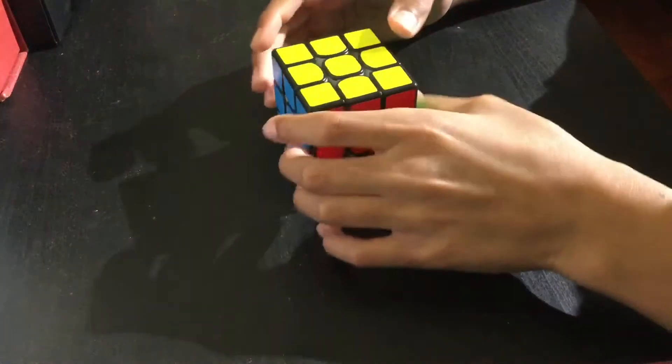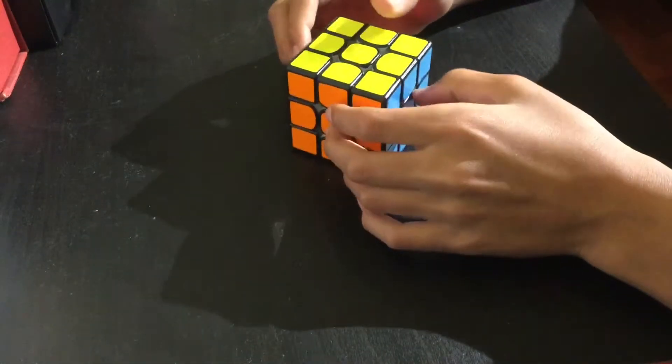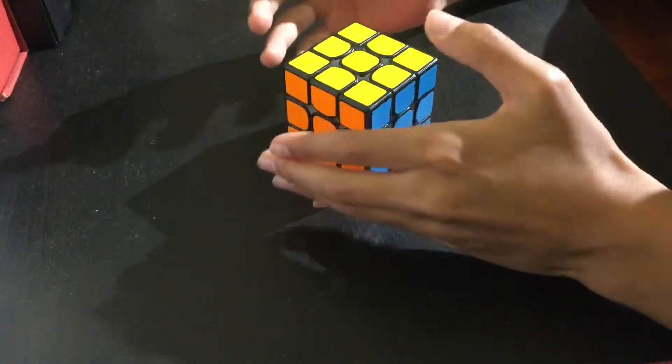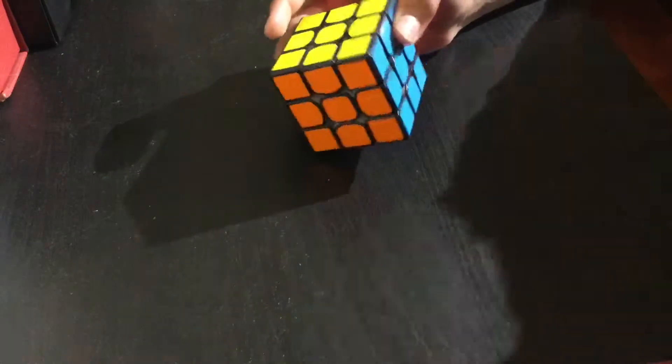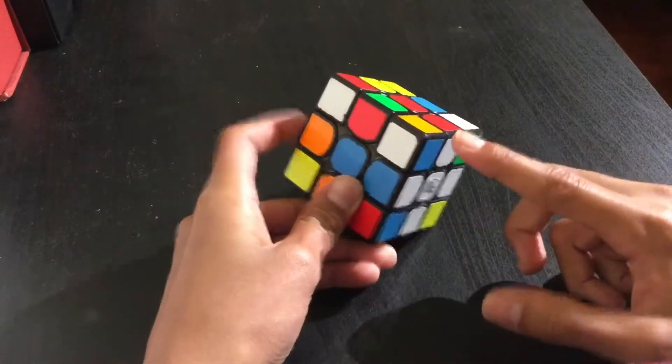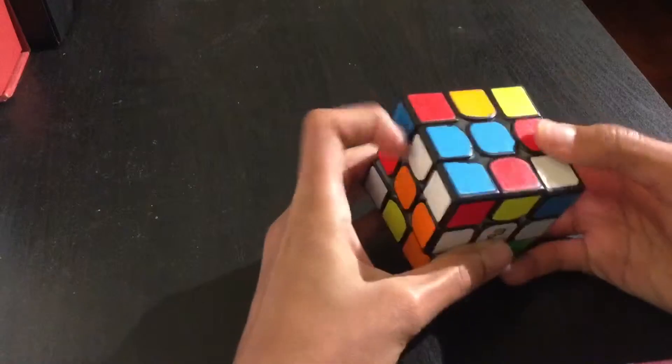Look ahead is when you can subconsciously do the step you're on but really be focused on the pieces for the next step. So when doing F2L look ahead, I would start with a pair like that.